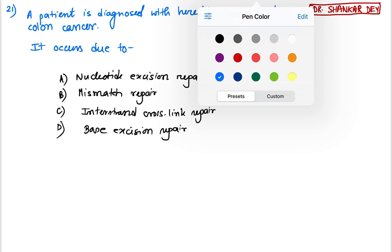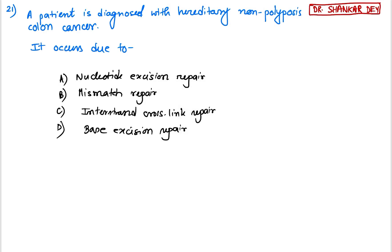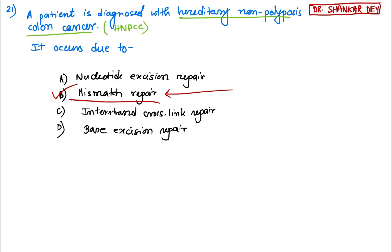A patient is diagnosed with hereditary non-polyposis colon cancer or HNPCC. The question asked: this cancer occurs due to which DNA repair pathway defect? The answer is mismatch repair. Hereditary non-polyposis colon cancer occurs due to a defect in mismatch repair of DNA.